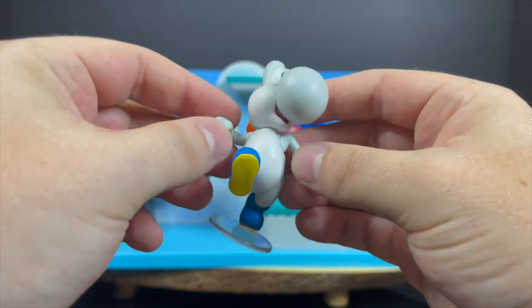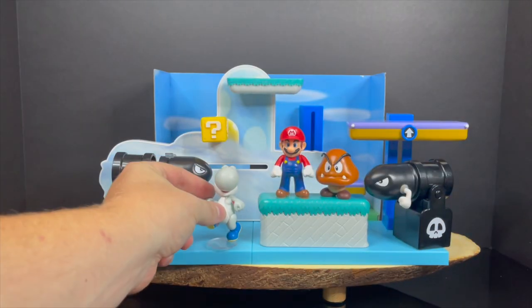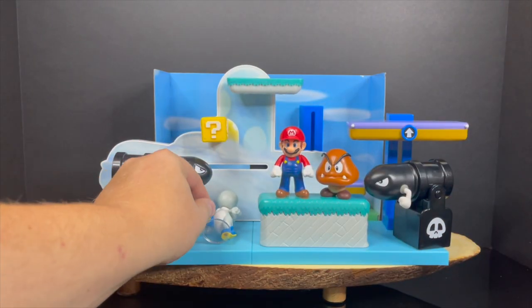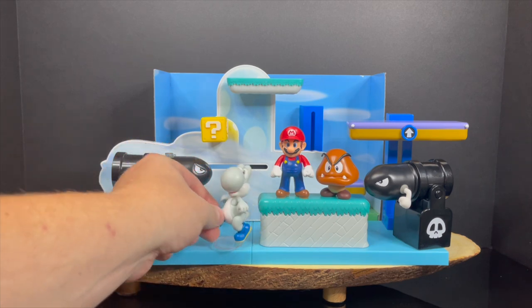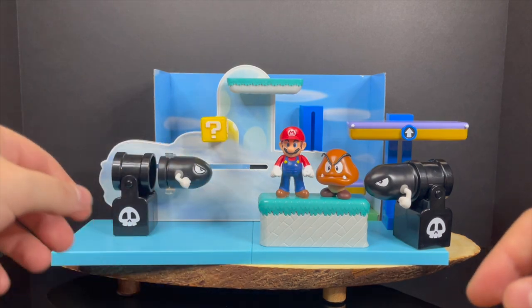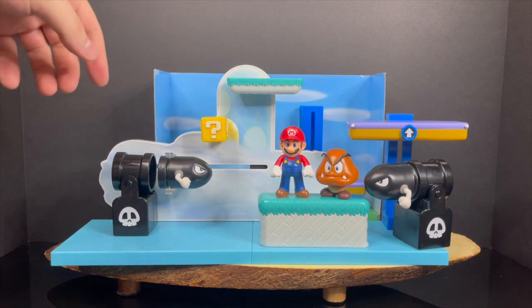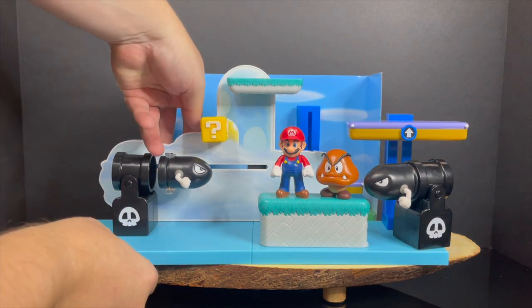And then you have the white Yoshi, who I would actually call a light gray Yoshi. He's not really a white Yoshi, but he looks nice. But he has a really hard time displaying because he likes to topple over. He's very top-heavy and the stand really doesn't do much. So Jax, if you could somehow fix the stand or give a bigger stand, that would be great.